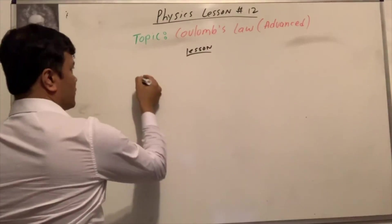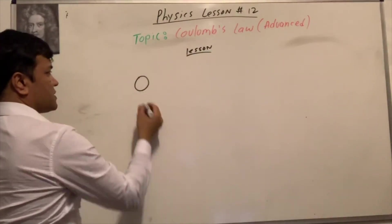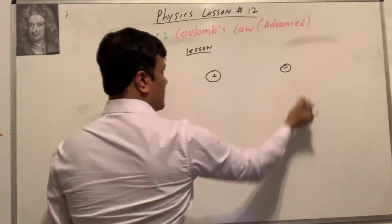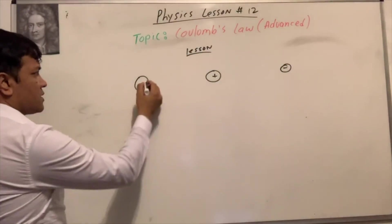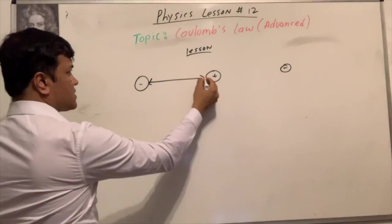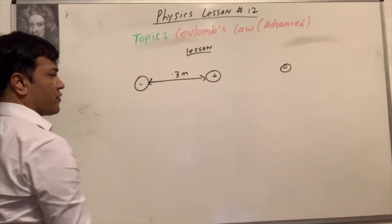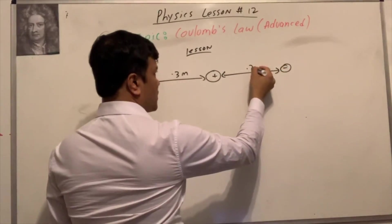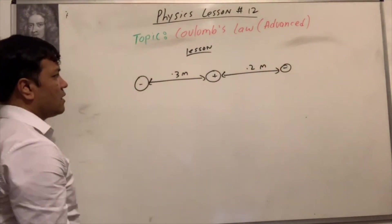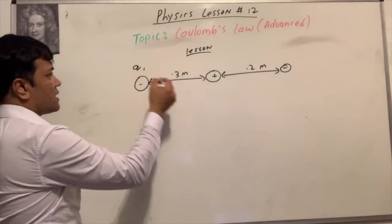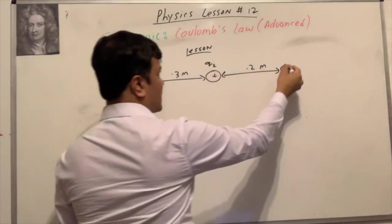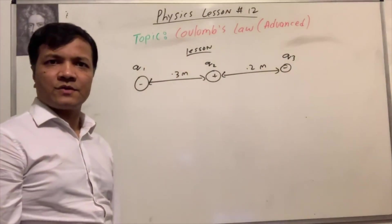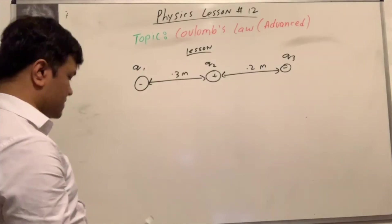Now I'm going to give you three charges. Let's make the first one negative, the second one positive, and the third one negative. The distance between the first and second is 0.3 meters, and the distance between the second and third is 0.2 meters. Let's call them q1, q2, and q3. I need to give you the charge values.